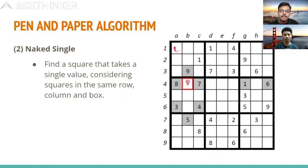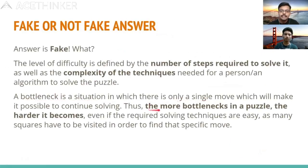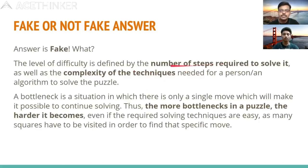For example, if the first cell supposedly has 9 and we try values 1 through 8, we solve half the Sudoku each time and backtrack — wasting time. A graph shows this: when clues were around 27 it took 20 milliseconds, but increasing clues further did not decrease time — it sometimes increased. So the number of clues does not directly correlate with difficulty.